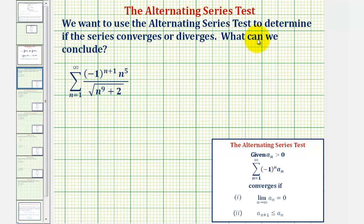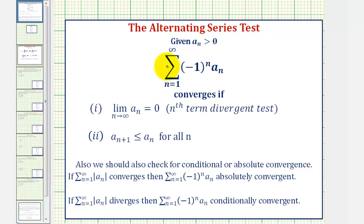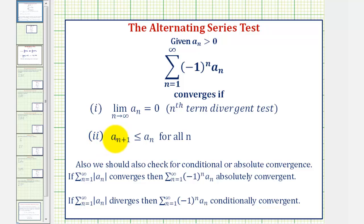We want to use the alternating series test to determine if the given infinite series converges or diverges. For a quick review, if we have an alternating series in this form, where a sub n is greater than zero, the alternating series converges if the limit as n approaches infinity of a sub n equals zero — which is the nth term divergence test — and a sub n plus one is less than or equal to a sub n for all n, meaning the terms are non-increasing.